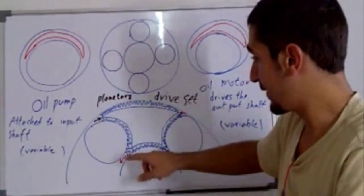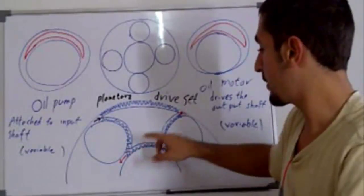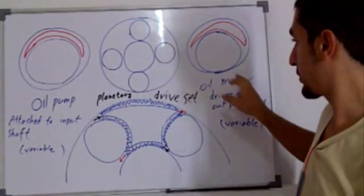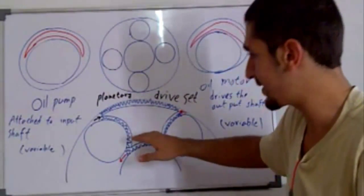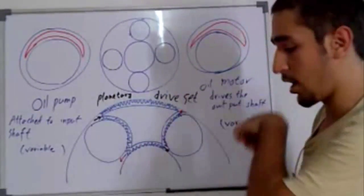The oil pump will slowly increase the flow as needed on the planet carrier, and the oil motor will slowly limit the flow until the whole planetary drive set rotates as a unique part.